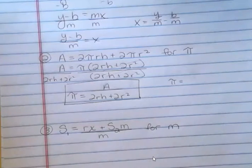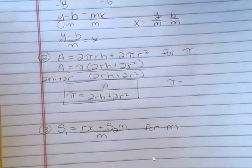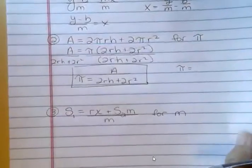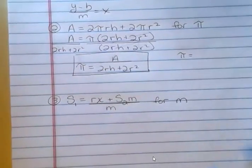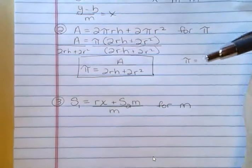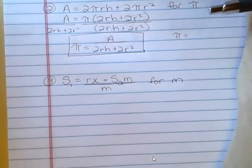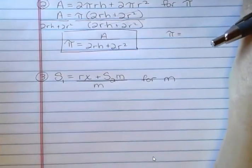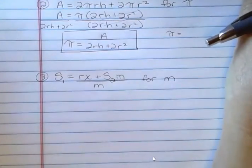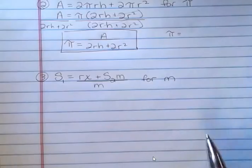What about this one? I put some subscripted variables in there because for those of you that are going on to science classes, that's a common thing. There's two different values for s, so we subscript them 1 and 2. That's all it means. It doesn't mean anything new. We'll do a couple with some subscripts so you get used to that notation.